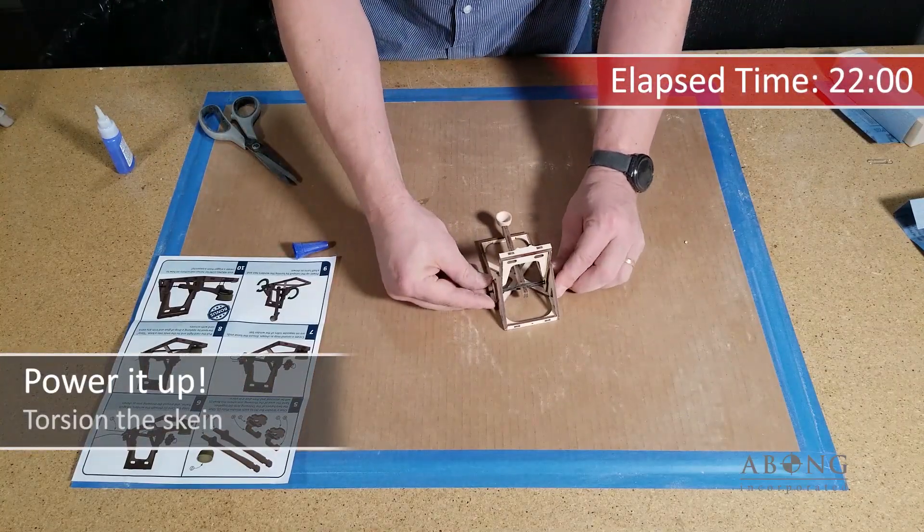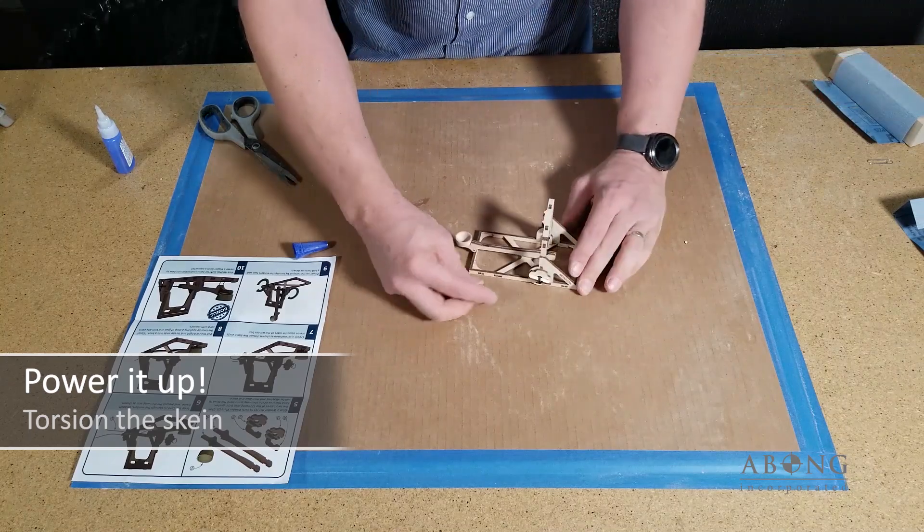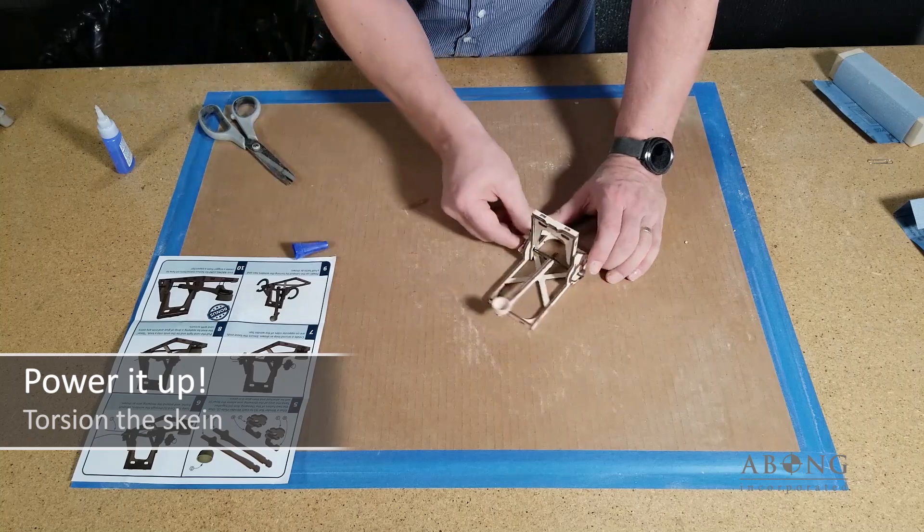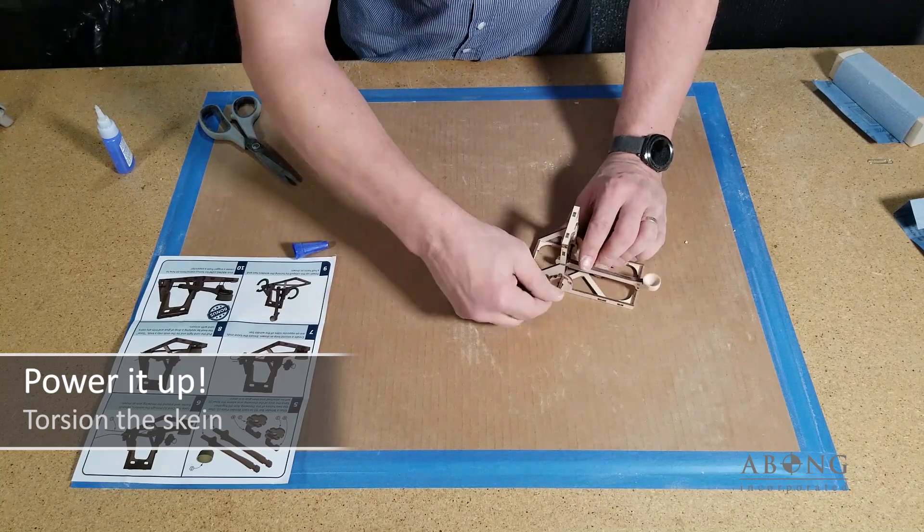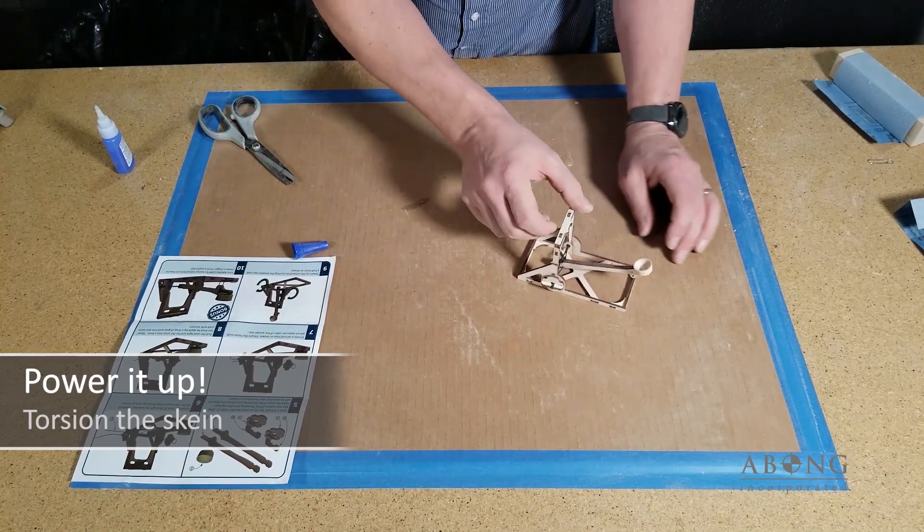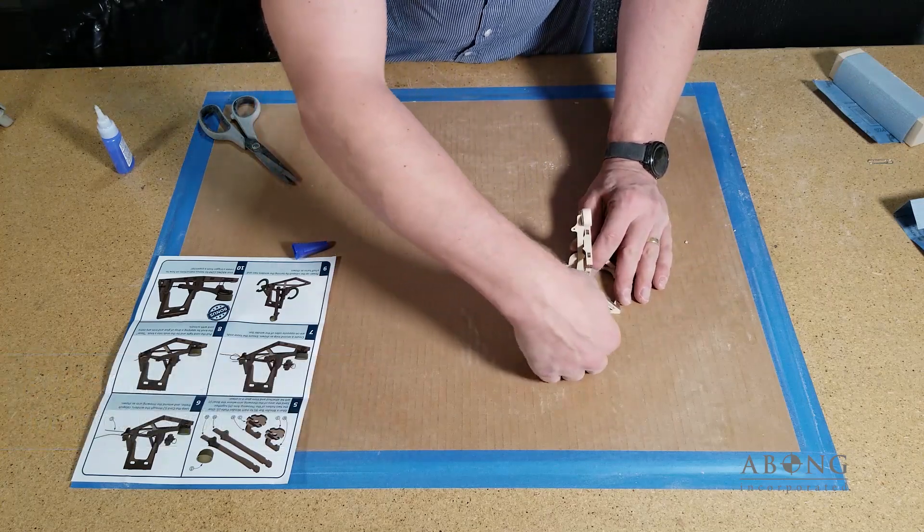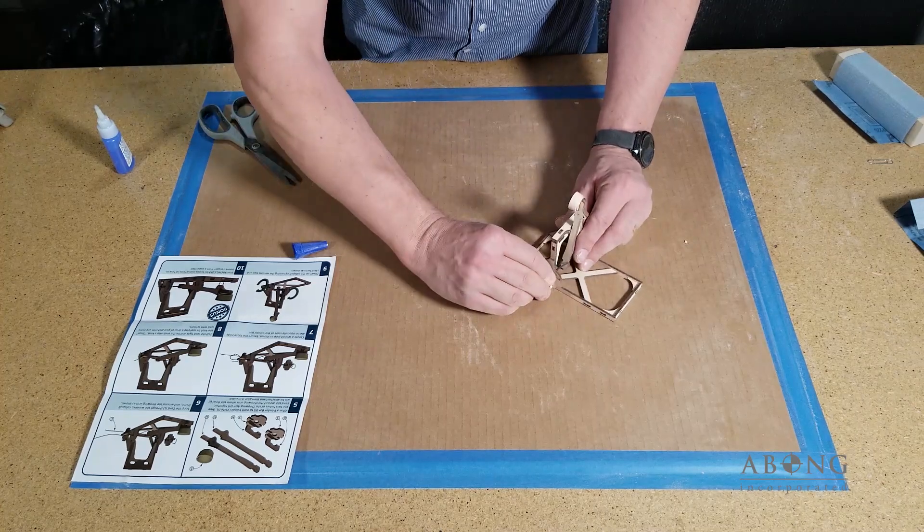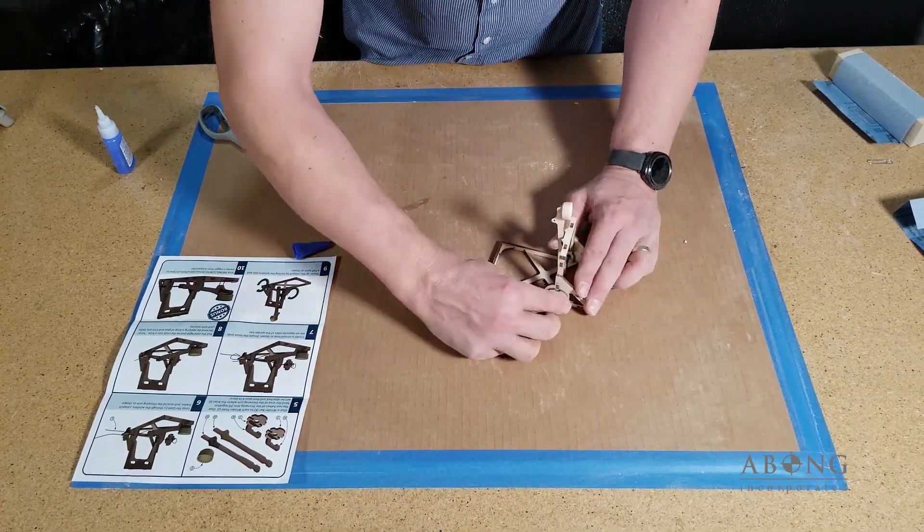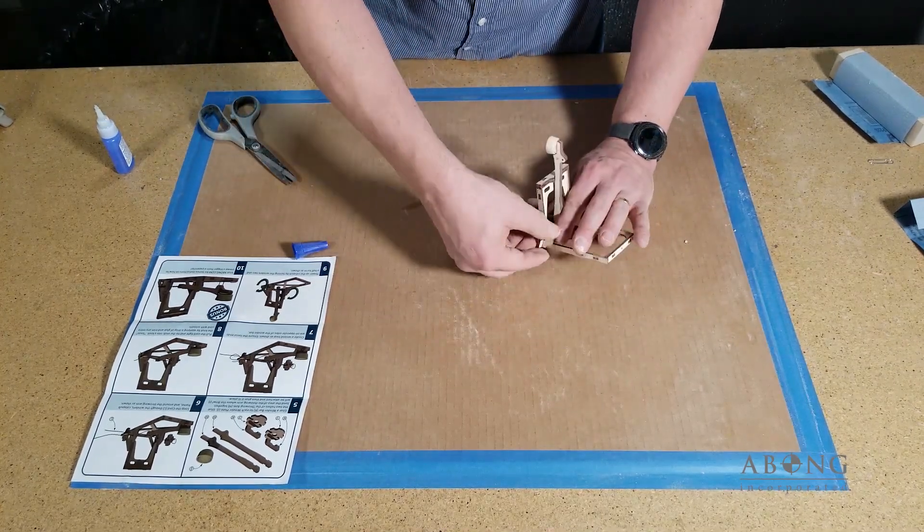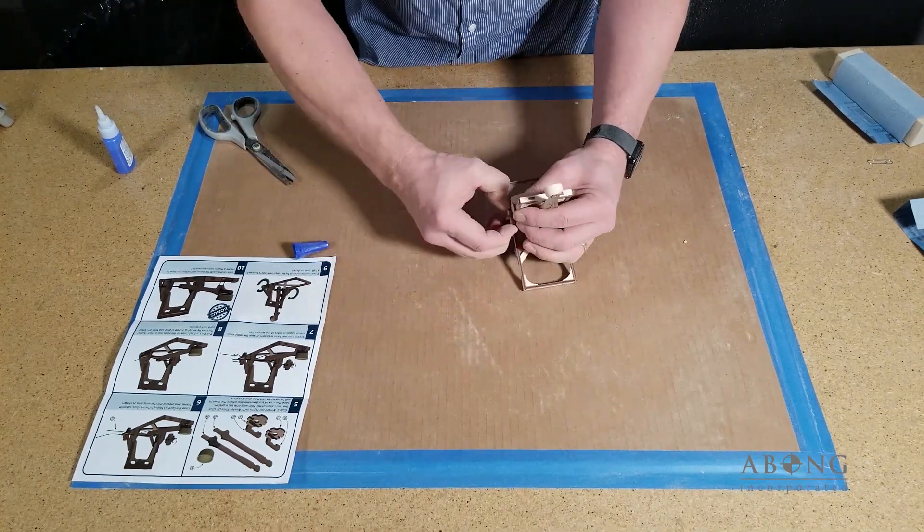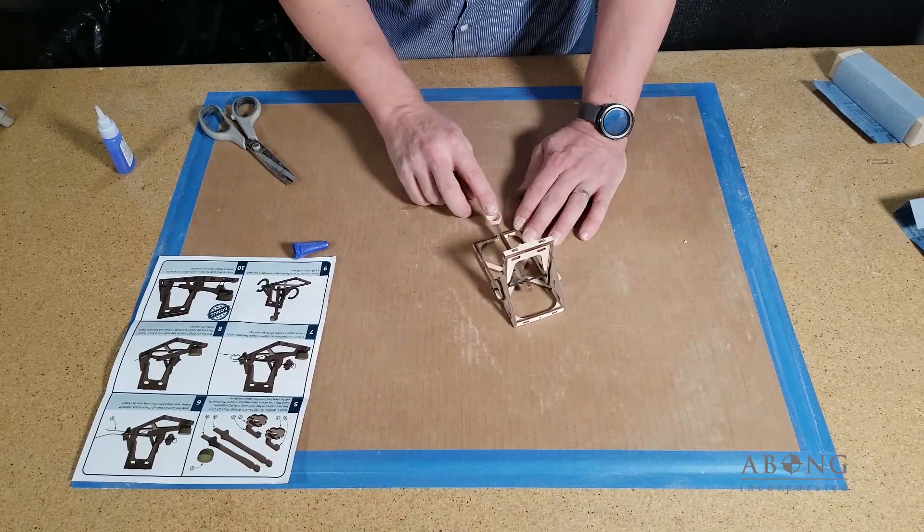So turn it half a turn on one side, half a turn on the other side. And you can see it's starting to rise against the bar. And we'll just go a couple more turns each side until we have enough tension there that we can throw our ammo. You don't want to over tension it because you can actually pull the whole catapult right apart and break it.